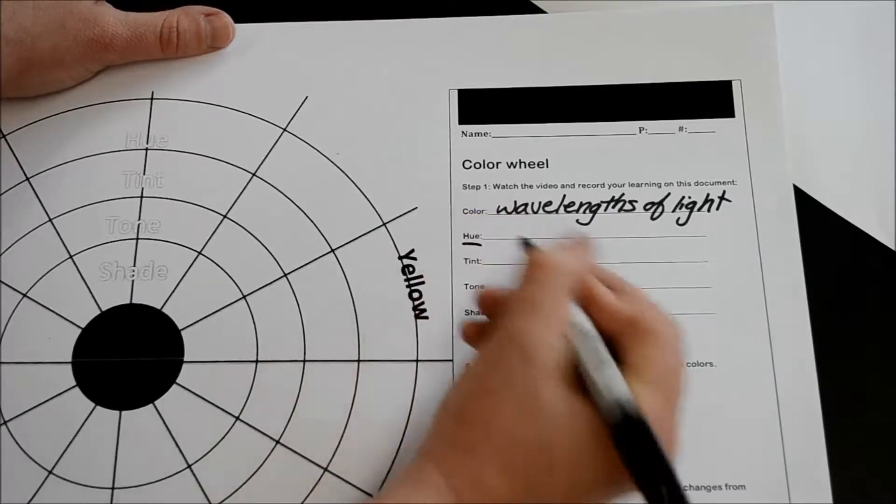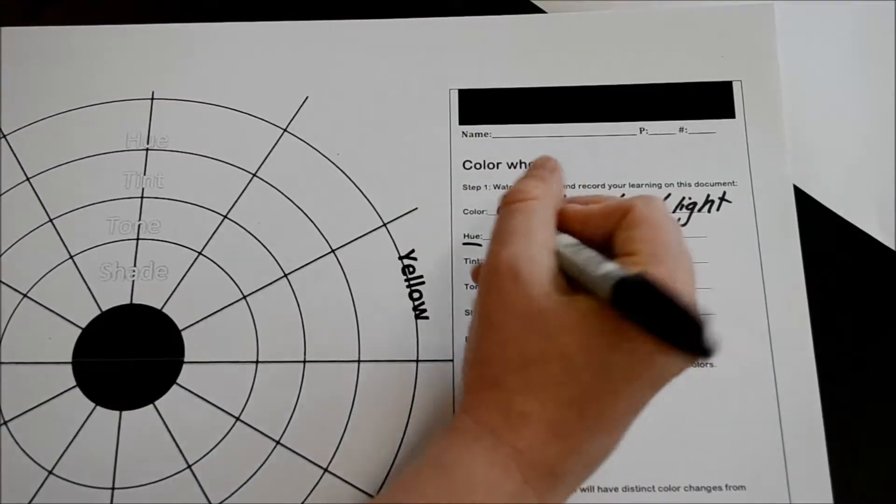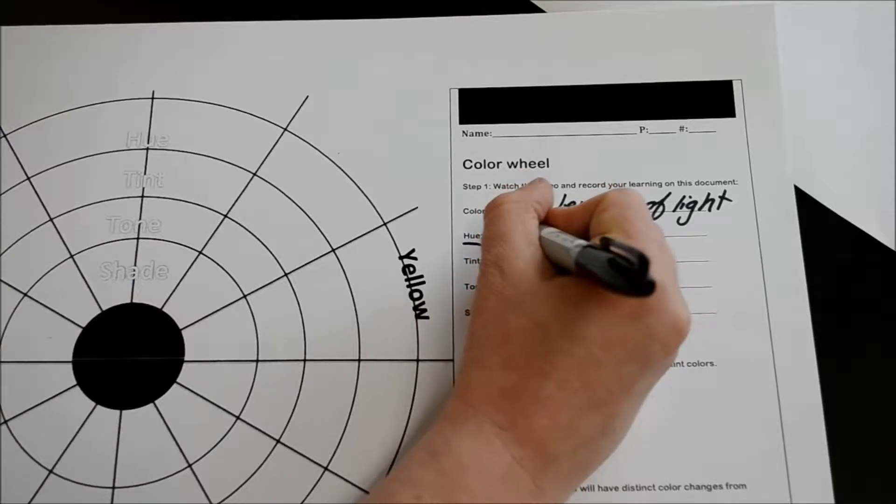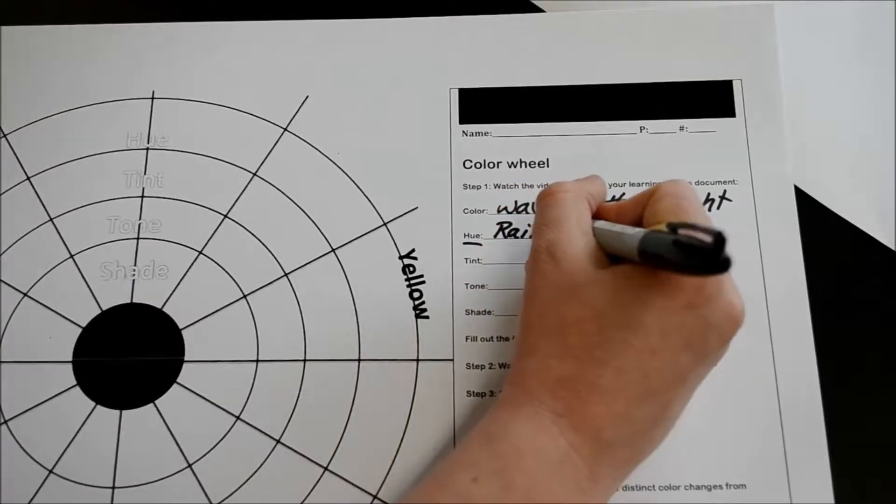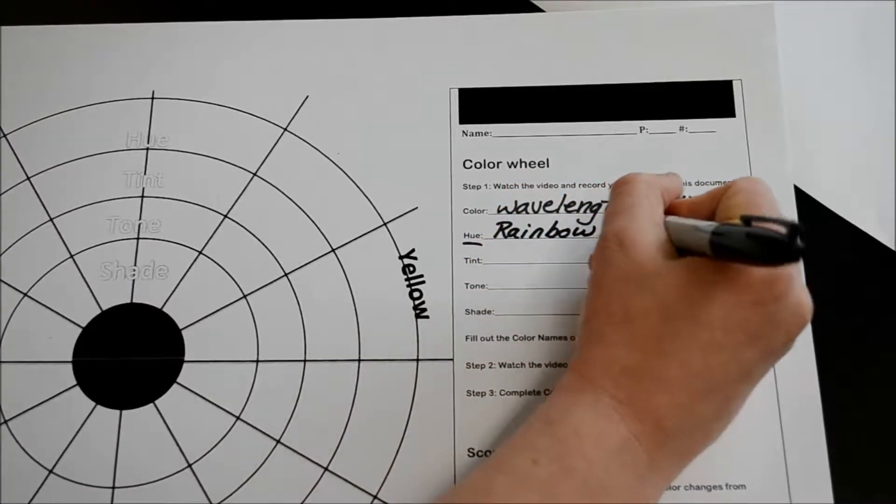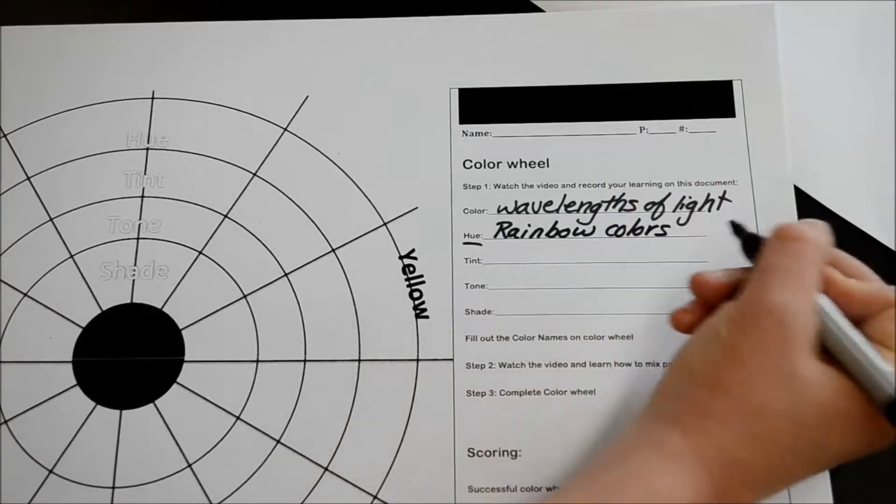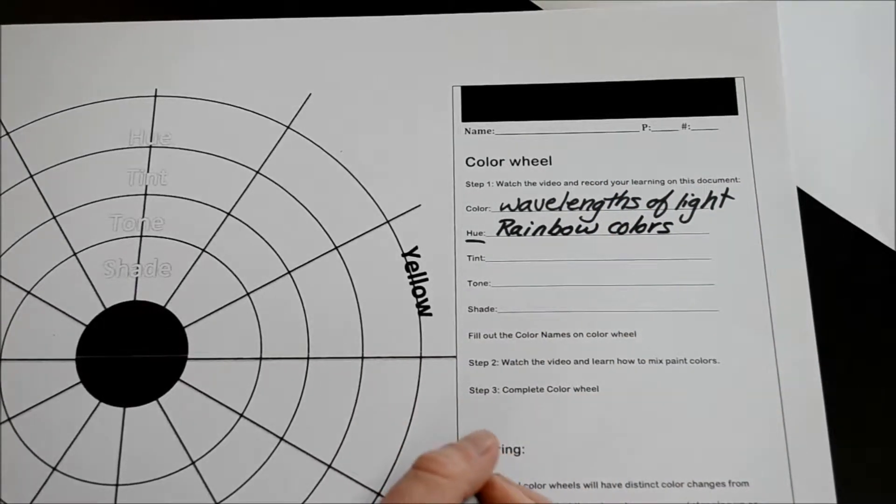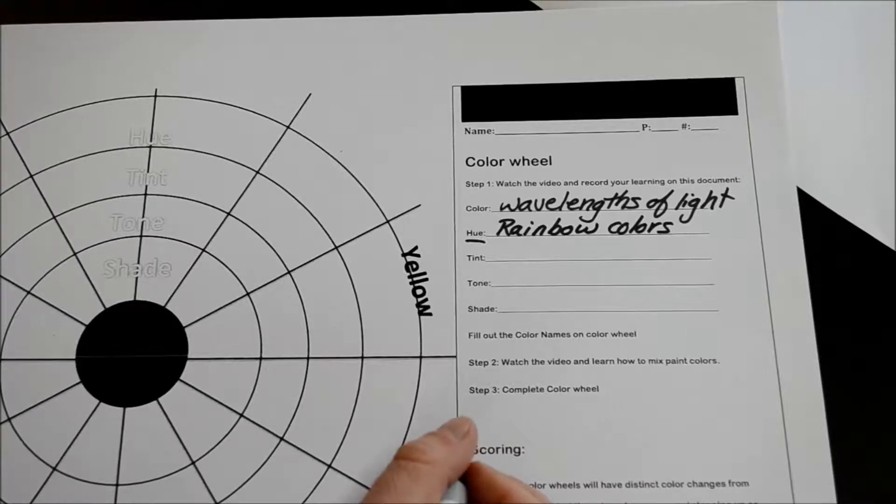Next, what is a hue? The hue is actually what we think of as rainbow colors. Now, if I get going too fast, just pause the video to give yourself time to write in the answers.